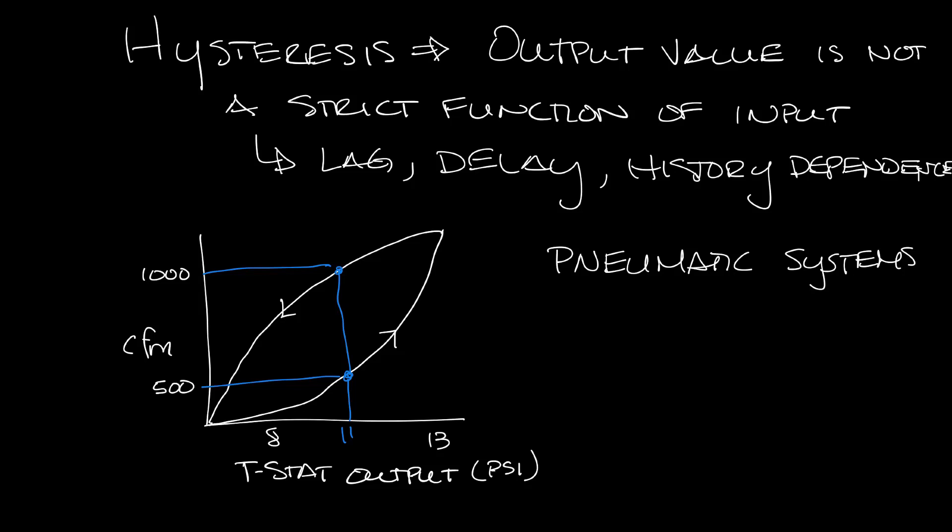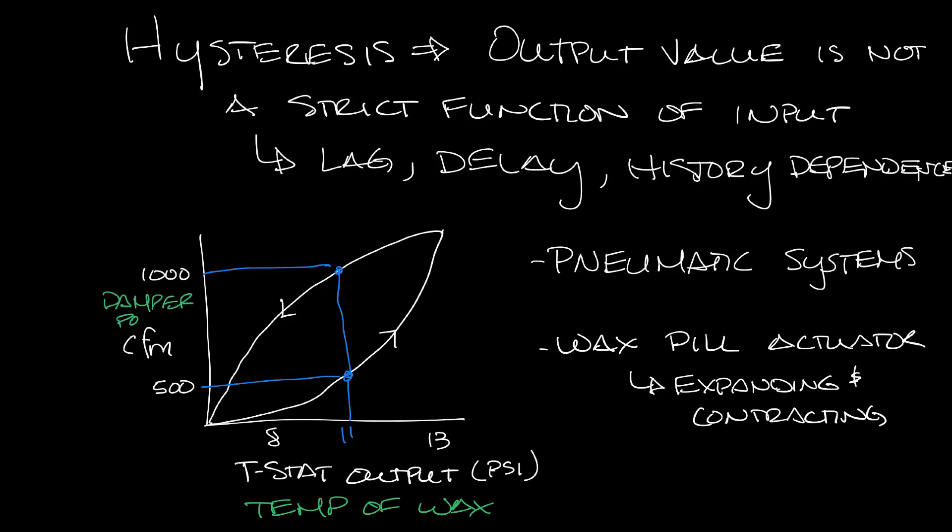The wax pill that actuates thermally controlled VAV diffusers also have hysteresis. The wax pill actuates the damper by expanding and contracting and it usually pushes some sort of lever and raises and lowers the damper. There's a difference in the response time for expansion and contraction as it heats up and cools down. Across the bottom we might have the temperature of wax as it heats up and expands. It moves the damper, but as it comes down, it comes down at a different rate than it went up. This hysteresis can be controlled by different blends of wax, but this is another place where you'll see hysteresis in HVAC.